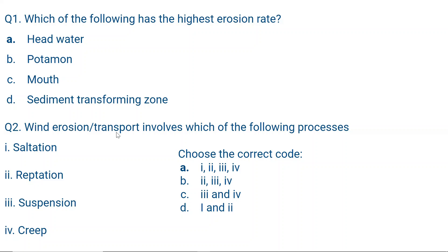Question number two: Wind erosion or transport involves which of the following processes? Saltation, reptation, suspension, or creep. Saltation means movement of sand and gravel over the surface of the earth due to wind velocity. Reptation is when sand or gravel pieces moving just above the surface collide with other particles on the ground, causing those ground particles to move. Suspension means particles are suspended in the air, and creep means traction — being dragged along the surface.